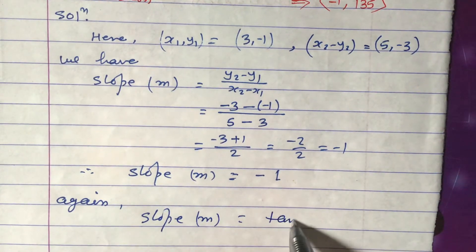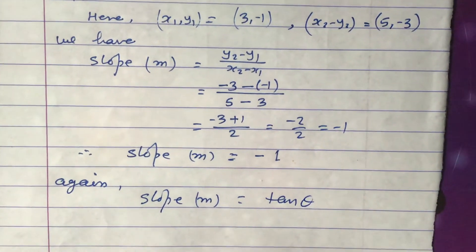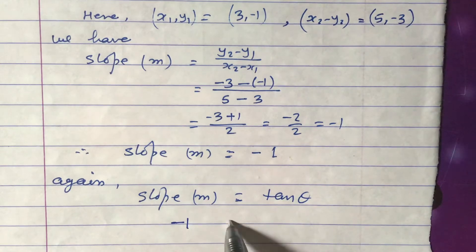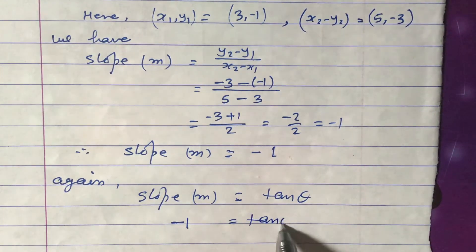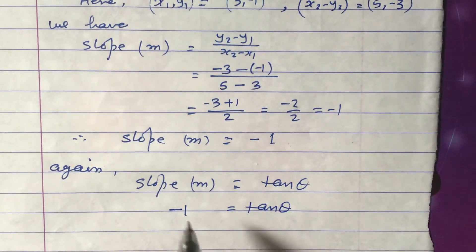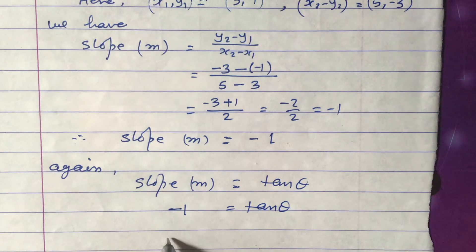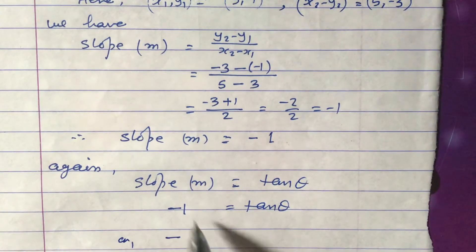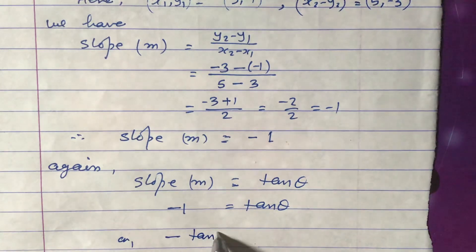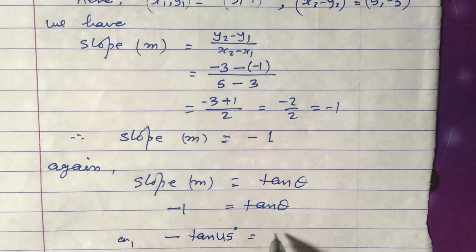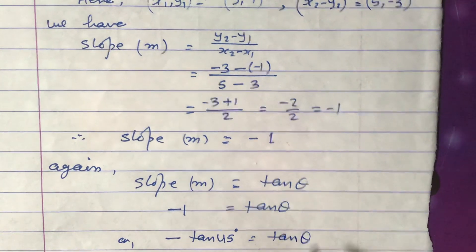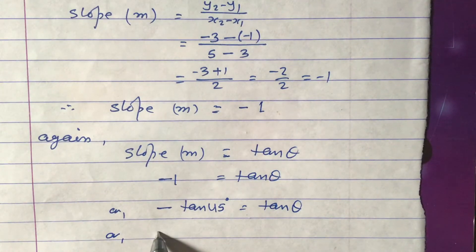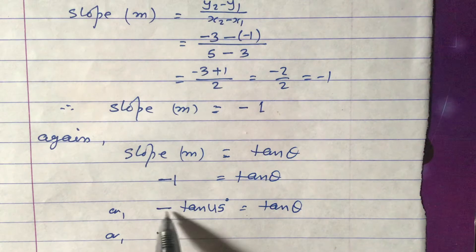In terms of inclination, slope is given by m equals tan θ. So we write: minus 1 equals tan θ. We know that tan 45° equals 1, so we have minus tan 45° equals tan θ.